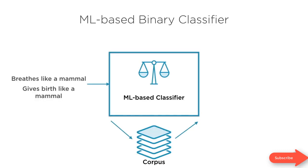Once training is complete, you'll feed in features of the new instance you want classified. If this is our fish versus mammal classifier, you'll feed in the details of a whale — it breeds like a mammal, it gives birth like a mammal — and hopefully your ML based classifier will tell you that the whale is actually a mammal.